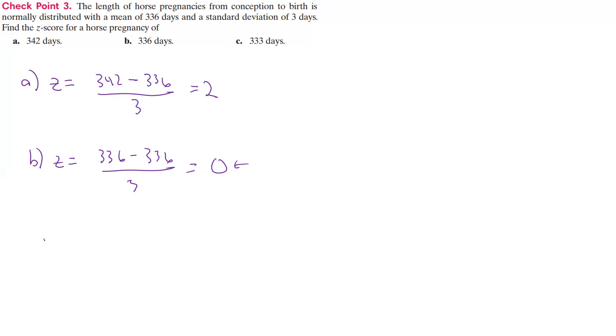For the last one, z equals 333 days minus 336 all over 3. That's going to be minus 3 over 3, so that's minus 1. Our z-score here is minus 1. Alright, so let's stop there and we'll come back for some more.